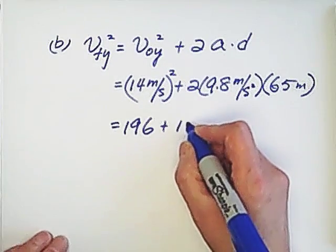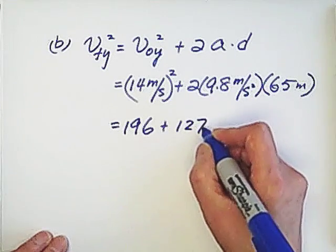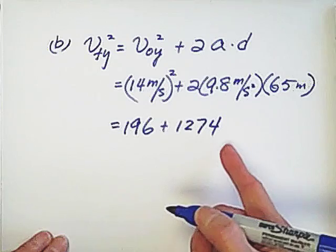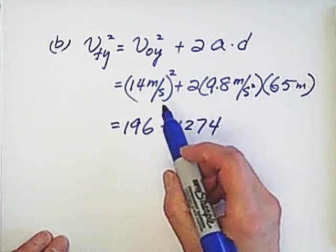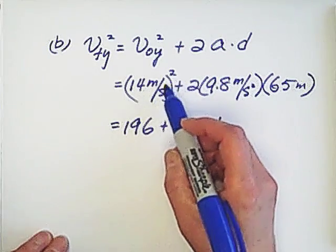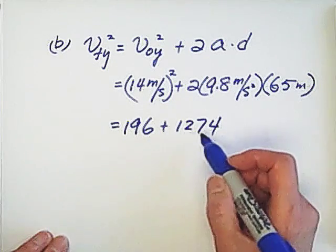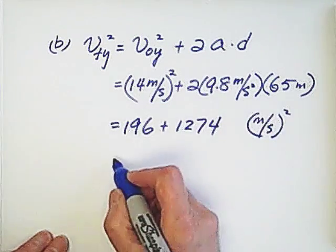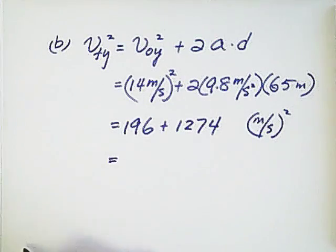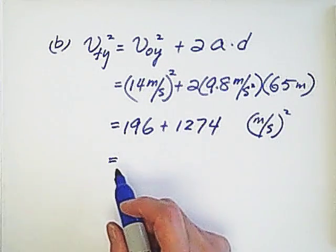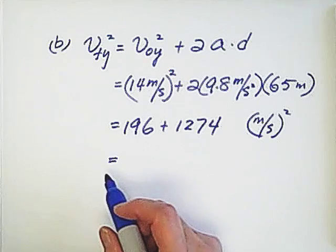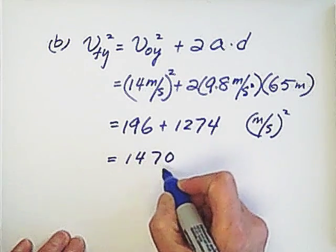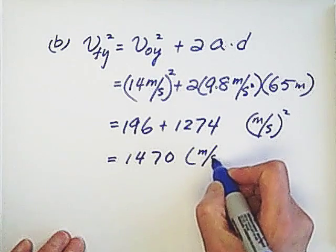We got 1274. The unit is meters per second squared. So both of them with meters per second squared.